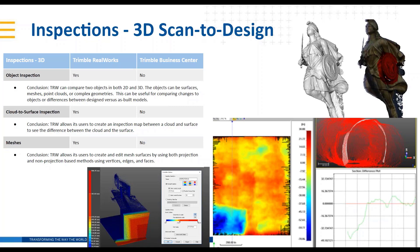RealWorks treats meshes and surfaces almost the same way. Where TBC can do edits on 2.5D surfaces, RealWorks can do edits on full 3D meshes — creating and editing mesh surfaces using both projection and non-projection based methods, like unfolding a cylinder to pick up a tank, or using a vertical plane as the basis for projection to pick up vertical features, getting that full 3D dimension.